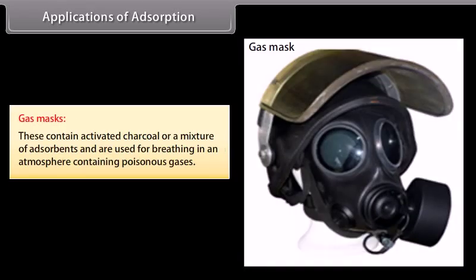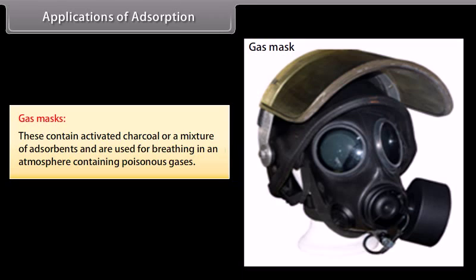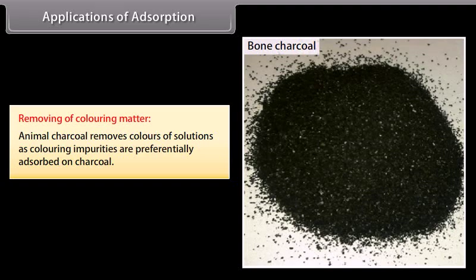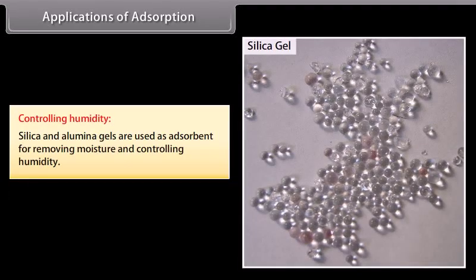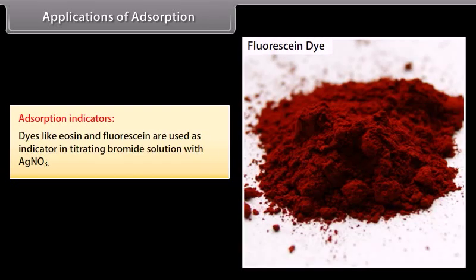Applications of adsorption: Gas masks contain activated charcoal or a mixture of adsorbents and are used for breathing in an atmosphere containing poisonous gases. Removing coloring matter — animal charcoal removes colors from solutions as coloring impurities are preferentially adsorbed; for example, bone charcoal is used as a decolorizer in the sugar industry. Controlling humidity — silica and alumina gels are used as adsorbents for removing moisture. Adsorption indicators — dyes like eosine and fluorescein are used as indicators in titrations.